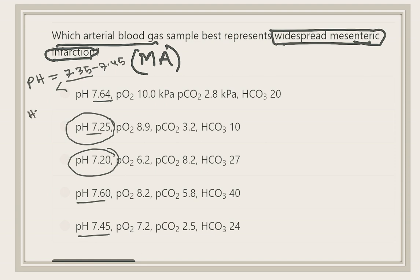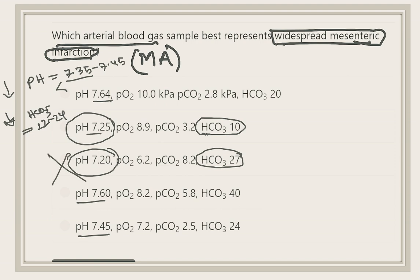Since it is metabolic acidosis, we now look at the bicarbonate level. Normal bicarbonate is 22 to 28 millimoles per liter, and in metabolic acidosis it is reduced. In option B, the bicarbonate is 10, which is less than 22 — so it may be the answer. In option C, the bicarbonate is 27, which is within the normal range — so it is not the answer. Our answer is option B.